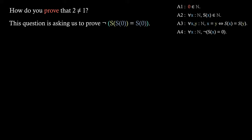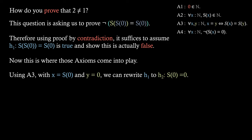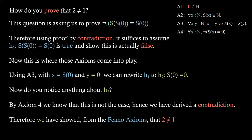Using the contradiction method, we assume that two equals one and show this is false. So we create hypothesis H1: the successor of the successor of zero equals the successor of zero. Now we use the third axiom, taking x to equal the successor of zero and y equals zero. Therefore we rewrite H1 into H2, which is just the successor of zero equals zero. This is simply an application of axiom A4, the fourth axiom. Hence we have derived the contradiction, and together we have shown from the Peano axioms that two doesn't equal one.